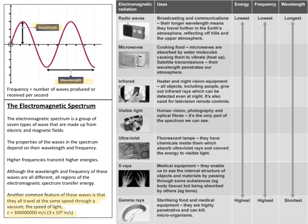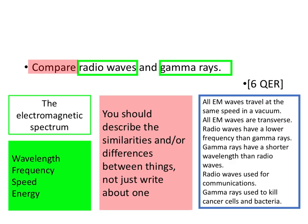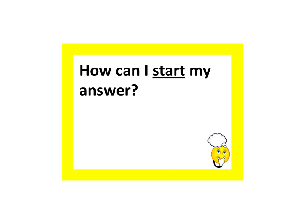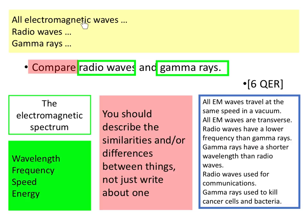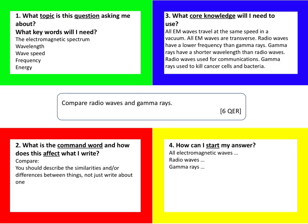All electromagnetic waves travel at the same speed in a vacuum, they're all transverse, and they all transfer energy without transferring matter. For sentence starters: 'Radio waves have a longer wavelength than gamma rays,' 'Gamma rays have a higher frequency than radio waves,' or 'Gamma rays have a higher energy than radio waves.'